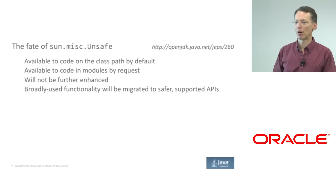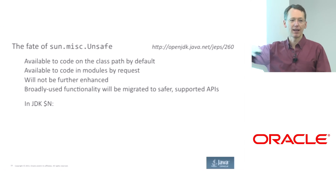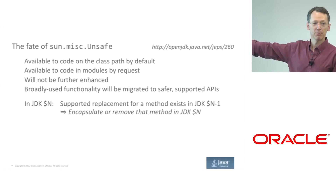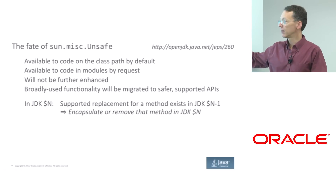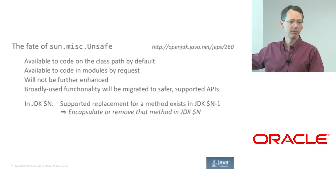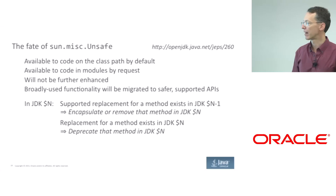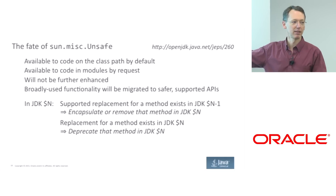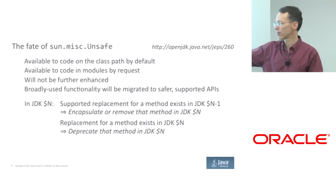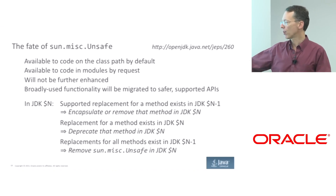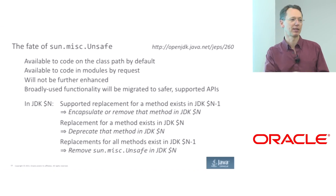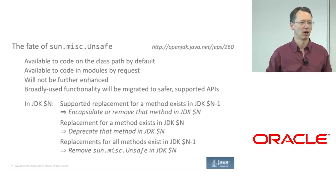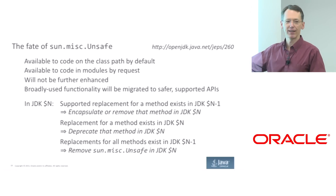Here's the recipe for what will happen in which release. In a particular JDK release N, if a supported replacement for an Unsafe method exists in the previous release N-1, then we will encapsulate or remove that method in release N. So you've got one release to figure it out. If a replacement for a method exists in that release, we will deprecate that Unsafe method, possibly with a new even stronger deprecation tag that's even more annoying. Once replacements for all Unsafe methods exist in the previous release, sun.misc.Unsafe will be removed — gone. Whether N is 10, 11, or 12, I will leave to the future.